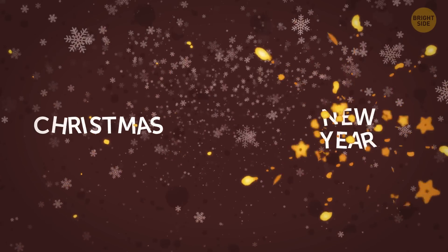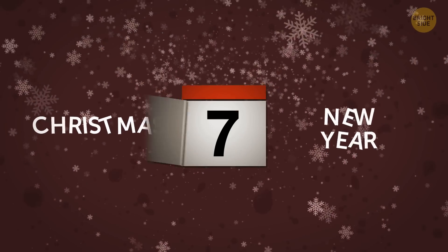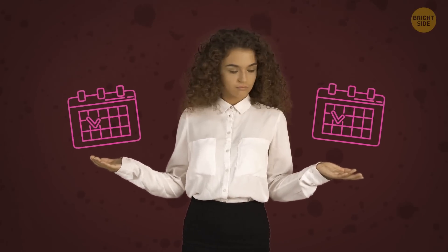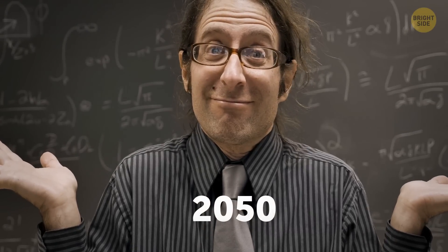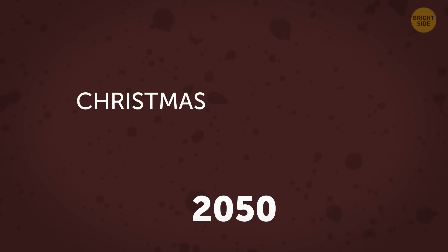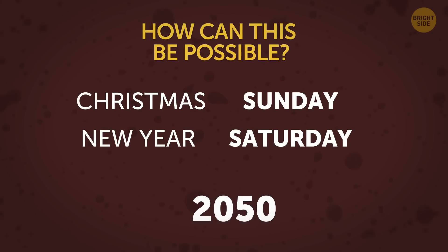It's a common fact that New Year occurs a week after Christmas. And therefore it falls on the same day of the week as Christmas. But this won't happen in 2050. In 2050, Christmas will occur on Sunday while New Year will fall on Saturday. How can this be possible?